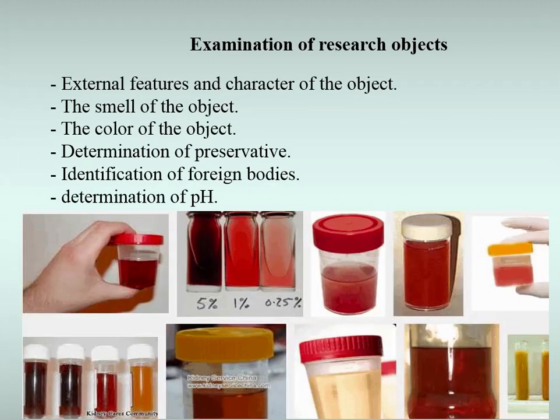In many cases, the examination of research objects or a simple visual inspection raises a certain possibility as to which substance caused the poisoning, and it allows taking the appropriate direction for further chemical toxicological analyses. Preliminary inspection of research objects clarifies the next direction of chemical toxicological analyses and provides valuable information about their appearance, odor, color, reaction type, pH, as well as the presence of foreign bodies and preservatives.